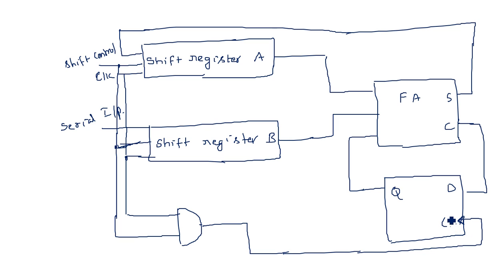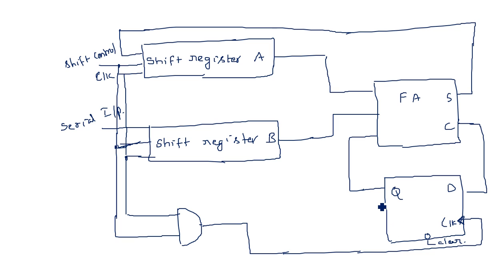The D flip-flop also has a clear pin. When this clear pin is enabled, the output is 0. It is an active-low pin, meaning we need to pass 0 on this pin to activate it. When clear is equal to 1, the normal operation of the D flip-flop follows — depending upon the rising or falling edge of the clock, the output varies.